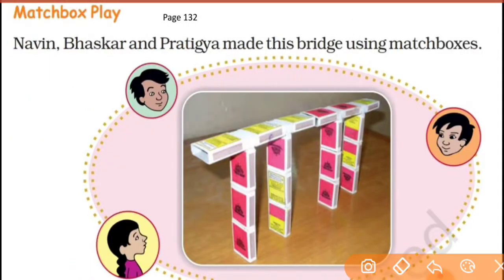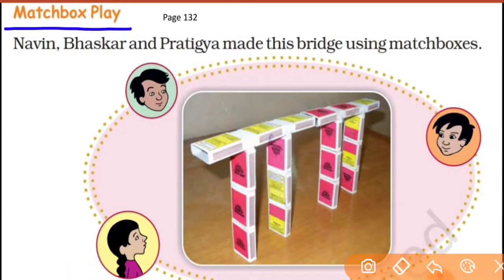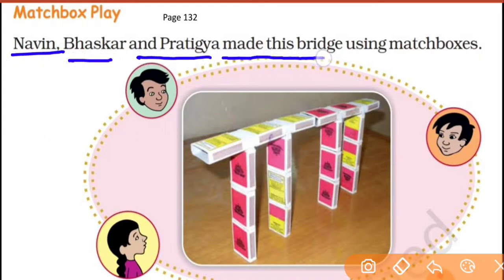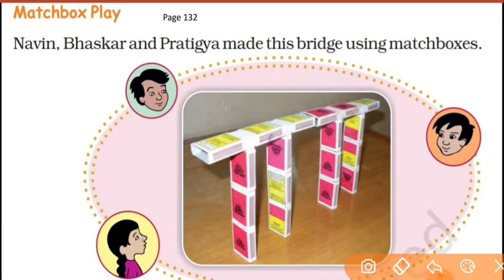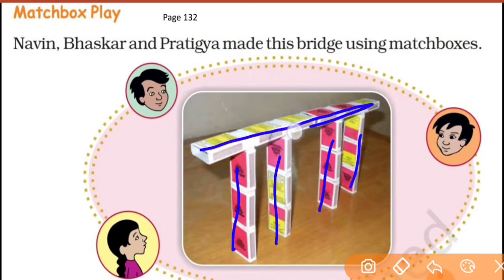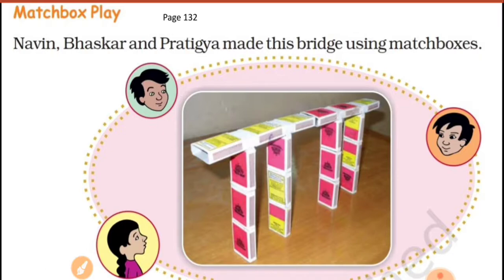Next, go to page number 132. The topic is 'Matchbox Play.' You must have seen and used a matchbox. You can use a matchbox to play a game. Naveen, Bhaskar, and Pratigya made a bridge using matchboxes. You can see the pillars and the road on top — they built a bridge using empty matchboxes.